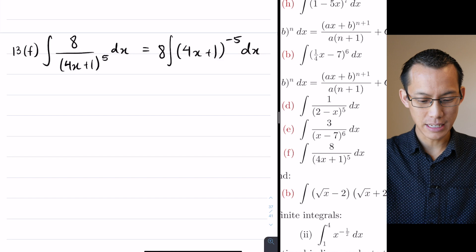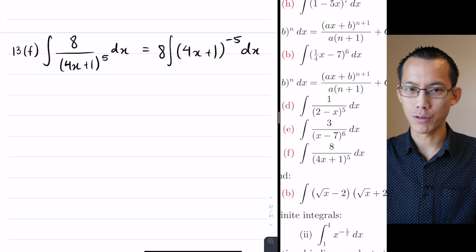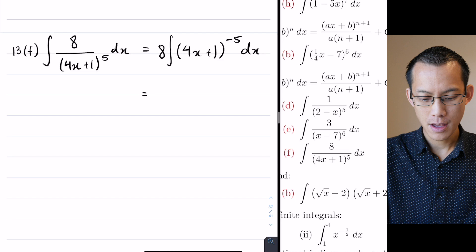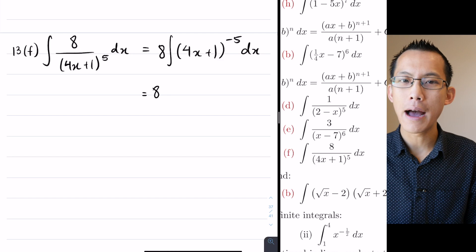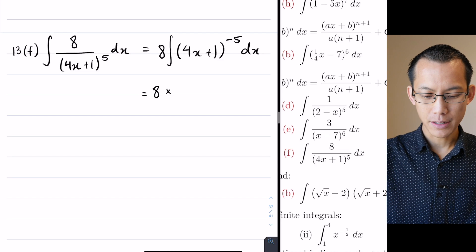Now I'm actually going to do the integration. So that 8 was outside of the integral, so I'm just going to write that down. That's multiplied by, well, what will my result be?